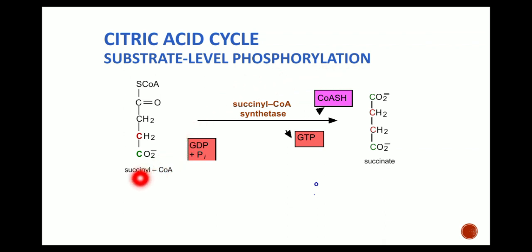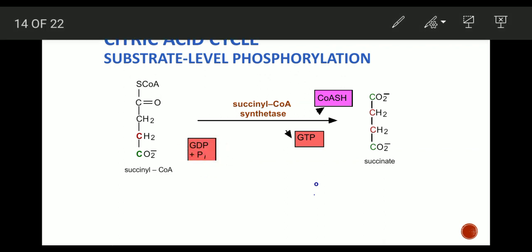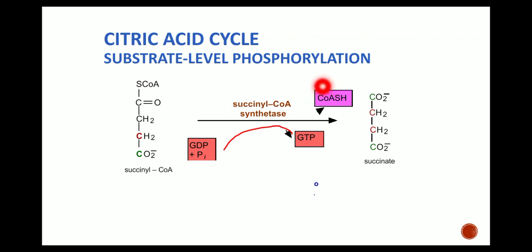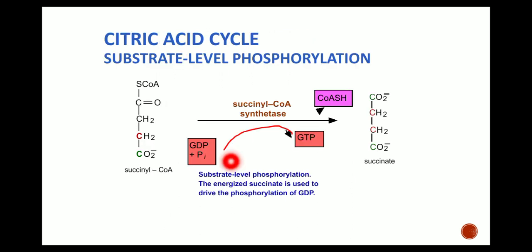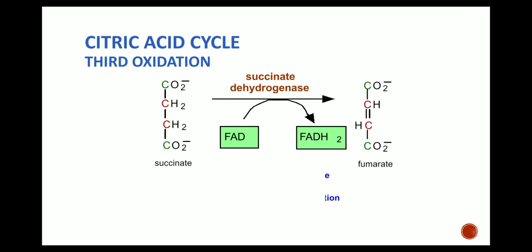In substrate-level phosphorylation, succinyl CoA is converted into succinate. GDP binds with inorganic phosphate to form GTP, with the release of CoASH. The enzyme acting is succinyl CoA synthetase. The energized succinyl CoA is used to drive the phosphorylation of GTP — this is substrate-level phosphorylation.